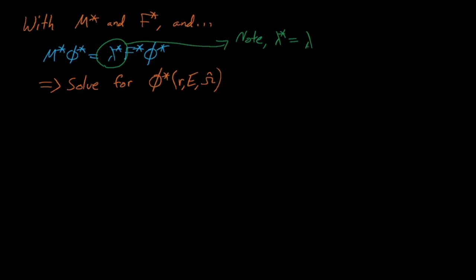Now we have all the terms in our adjoint Boltzmann transport equations, and we can use these equations to solve for the adjoint flux. In practice, how do we actually solve for the adjoint flux? The answer might surprise you, but we actually solve for it exactly the same way that we solve for the forward flux. We could apply an SN radiation transport code, or even a Monte Carlo code to solve these equations. The way that most people do this is essentially to trick the code into thinking that it's solving the forward Boltzmann transport equation, when it's actually solving the adjoint Boltzmann equation.